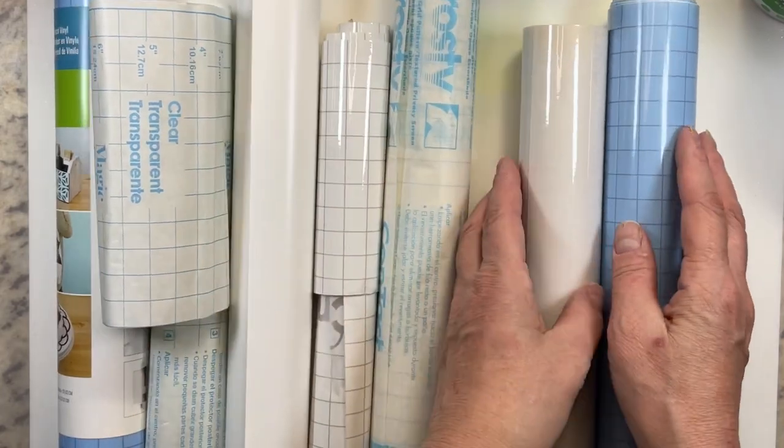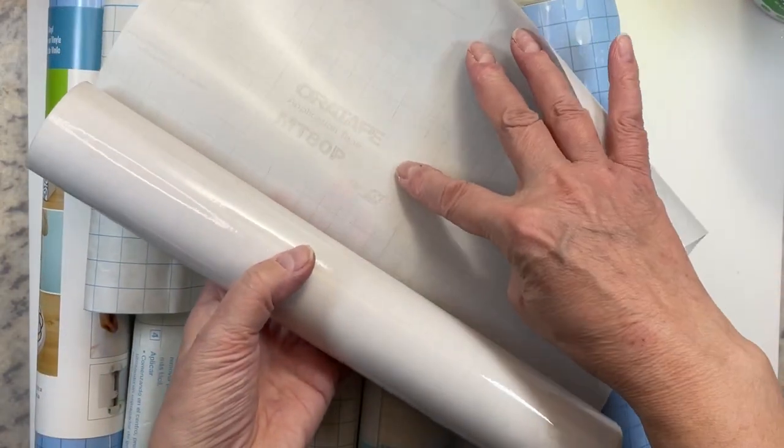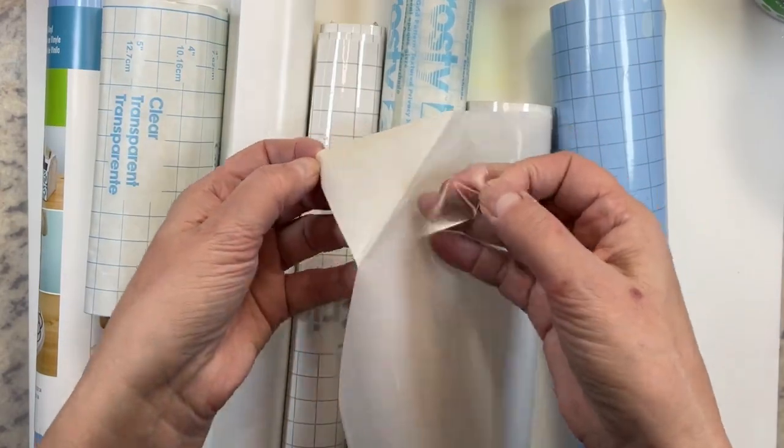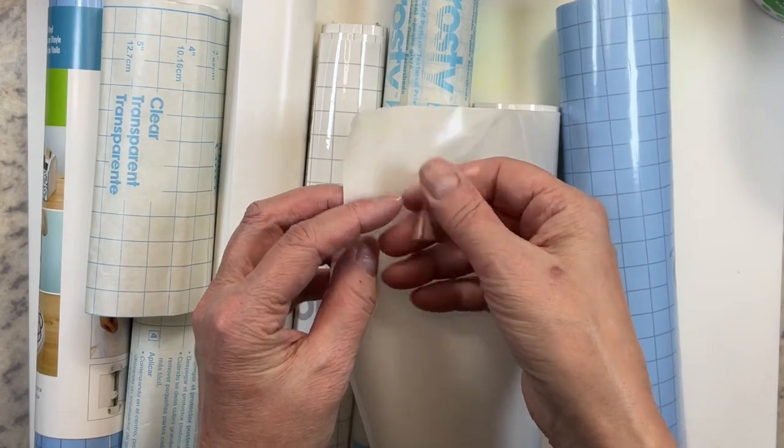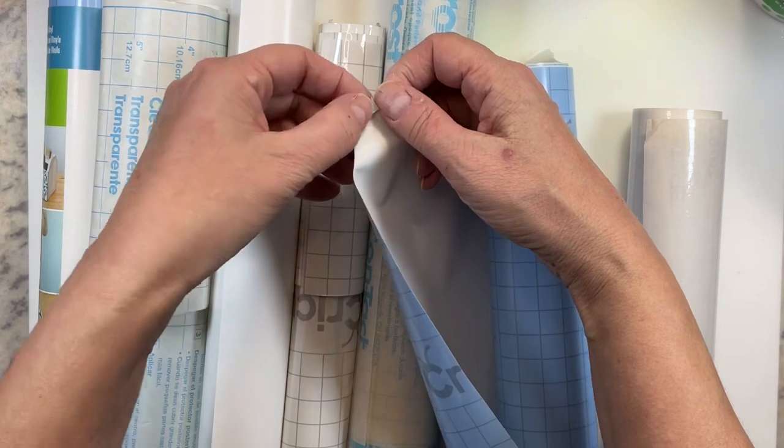Hopefully you have some of this adhesive product at home: MacTac transfer tape, maybe you bought some of the Cricut vinyl that is for making stencils. I know that the dollar store has its own kind of brand of book cover product that's very similar. Any of this will do, absolutely any of it.